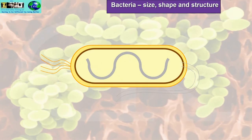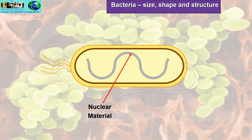Let's have a look at a bacterial cell — this is showing a rod-shaped cell. First, there's the nuclear material, which is the DNA. Scientists have found that DNA, especially in E. coli, is very similar to the DNA in human beings, other animals, and plants as well — possibly showing evolutionary similarities between bacteria, humans, and vegetation. The DNA is the bacteria's identity, the same as our identity.